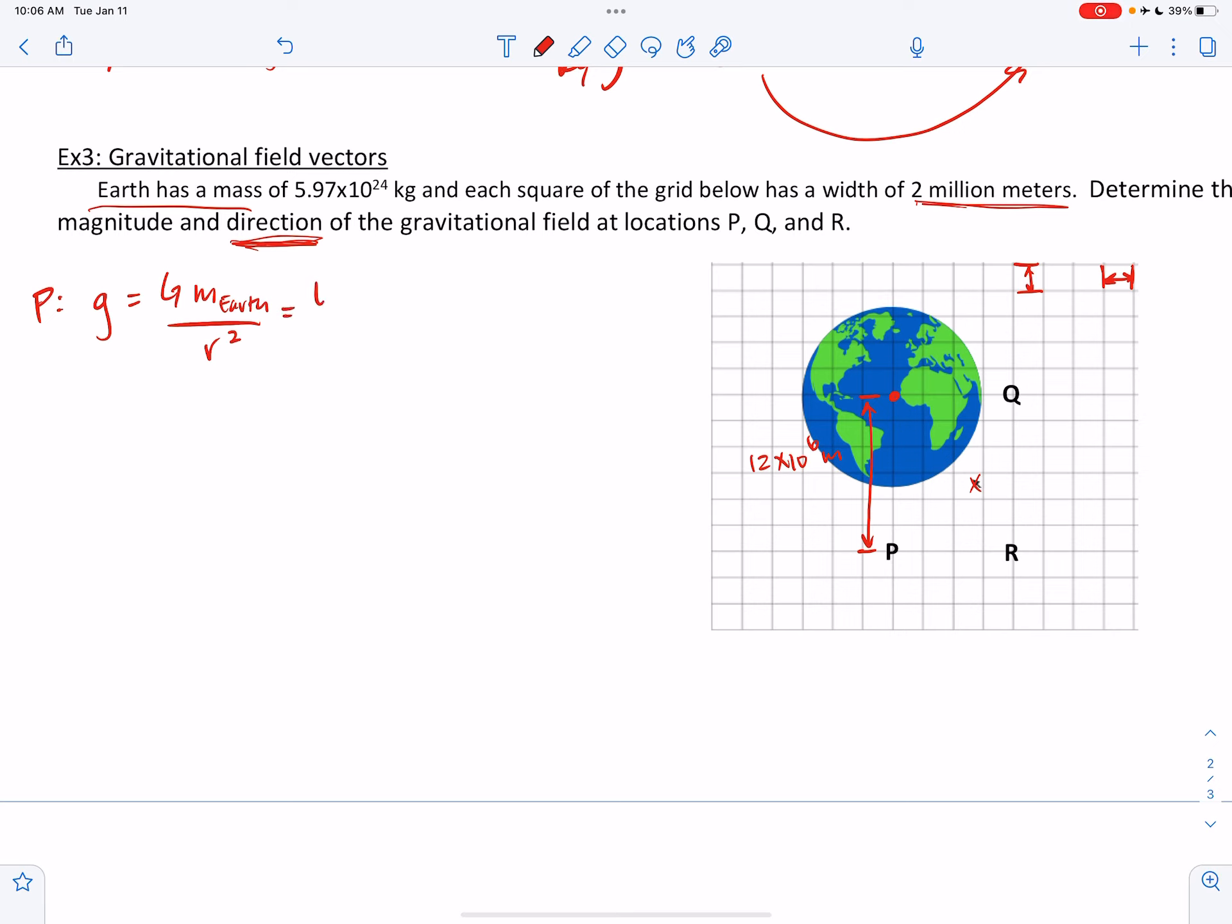So we're just going to plug in the numbers. 6.67 times 10 to the minus 11 newton meters squared per kilogram squared. The mass of Earth is 5.97 times 10 to the 24 kilograms.